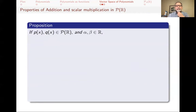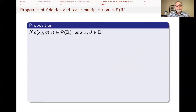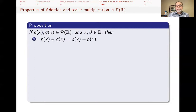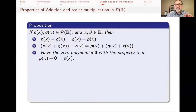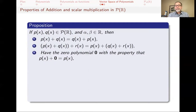What are the properties that polynomials share with ℝⁿ? The objects are different — polynomials as opposed to n-tuples — but the properties are the same. If P(x) and Q(x) are two polynomials and α and β are real numbers: addition is commutative — P(x) + Q(x) equals Q(x) + P(x); it is associative; we have a specific polynomial, the zero polynomial — y = 0 — that if you add it to other polynomials, nothing happens. That's the property that makes something zero: adding it to other things doesn't change them.